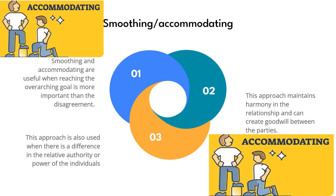Example 1: Scope adjustment. Consider a project where the project team has concerns about a proposed scope change that the client is adamant about implementing, believing it could jeopardize the project timeline and budget. However, maintaining a positive relationship with the client is crucial for future business opportunities. In a smoothing, accommodating approach, the project manager acknowledges the client's perspective and offers to accommodate the scope change while minimizing its impact on timeline and budget, prioritizing goodwill and a successful project outcome even if some adjustments are required.